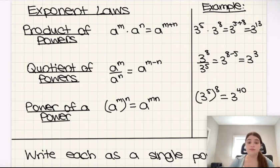Now similarly, we have quotient of powers. If we have a to the power m over a to the power n, then the answer is a to the power of m minus n. And so for instance, 3 to the power 8 over 3 to the power 5 is equal to 3 to the power of 8 minus 5, which is 3 cubed.